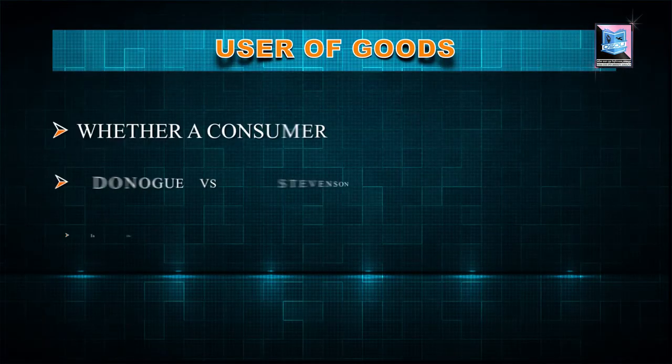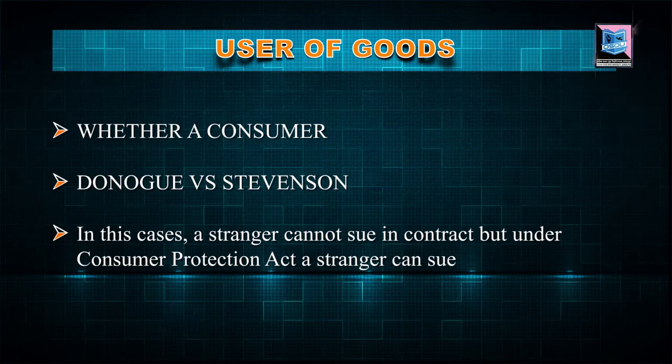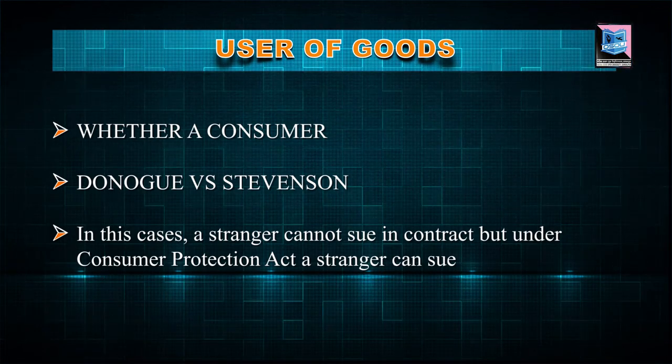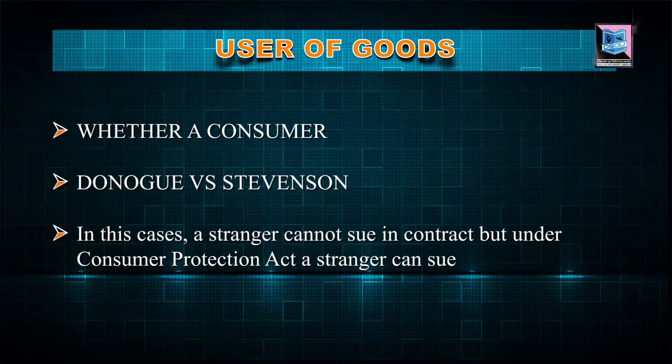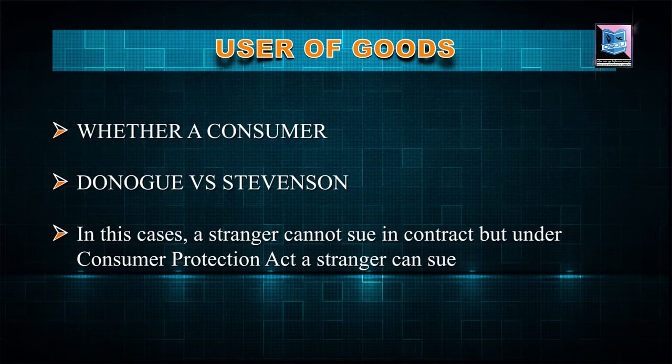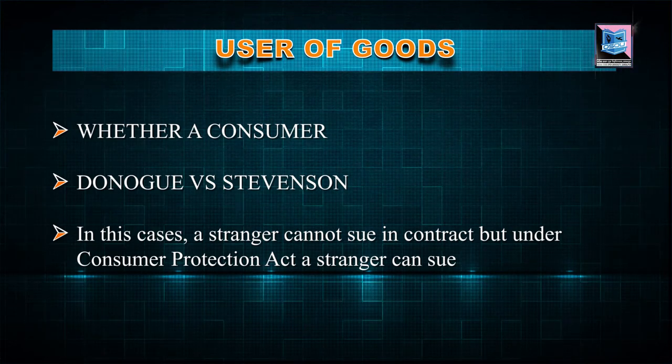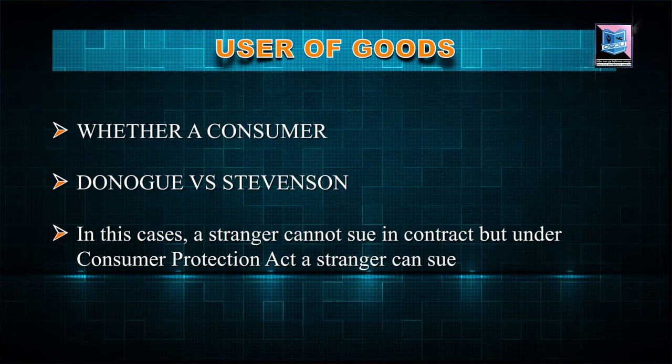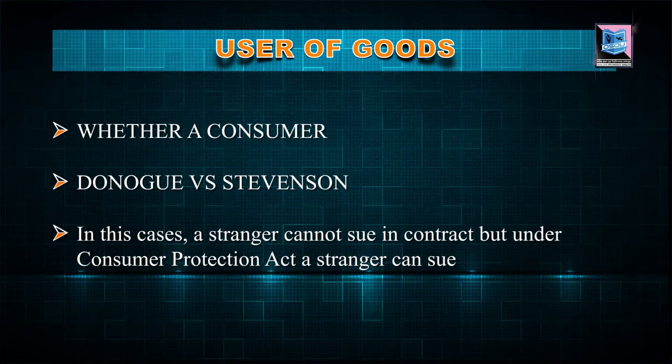Another concept in the consumer definition is 'user of goods.' We can cite the Donoghue versus Stevenson case, which says a stranger cannot be sued under the Indian Contract Act, but a stranger can be sued under the Consumer Protection Act. So if a person is using a product and paying for it, and is a stranger to the contract, that person can still be considered a consumer.